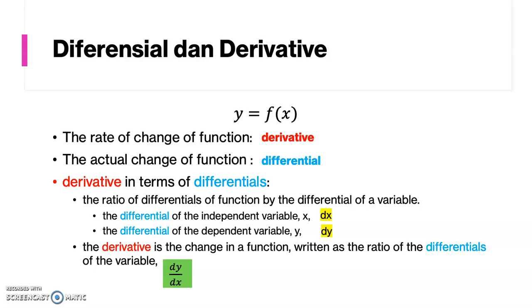So, we can conclude a function is a relationship between two variables, and so we can say the derivative is always a ratio of differentials. That is the short explanation of differential and derivative.